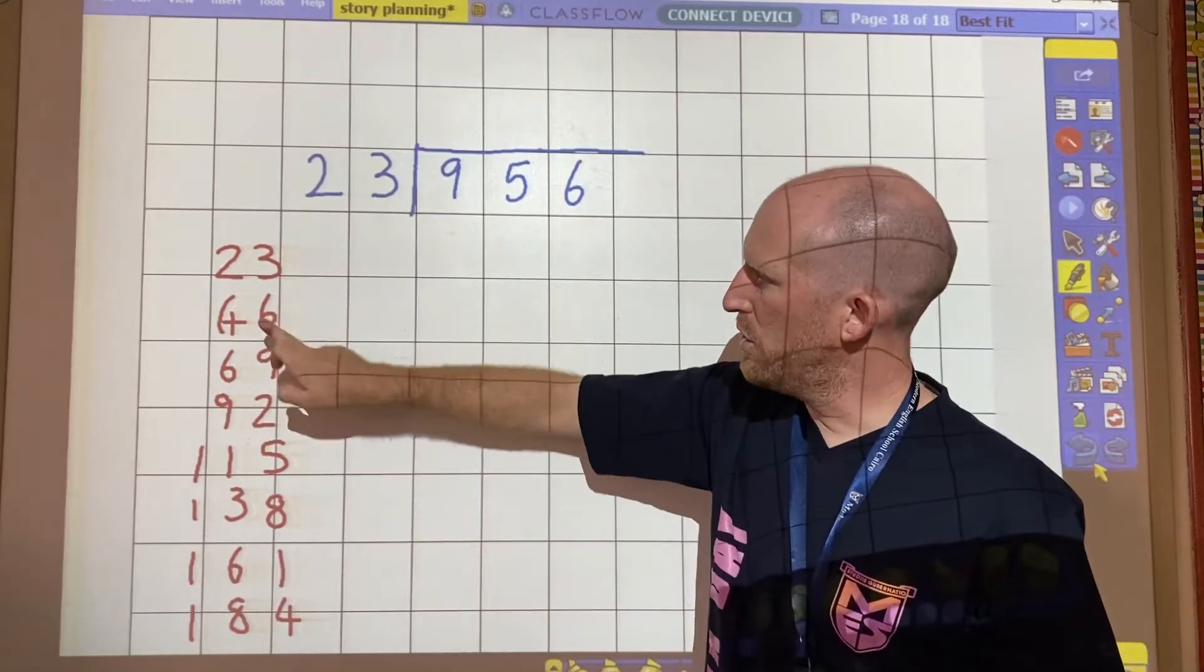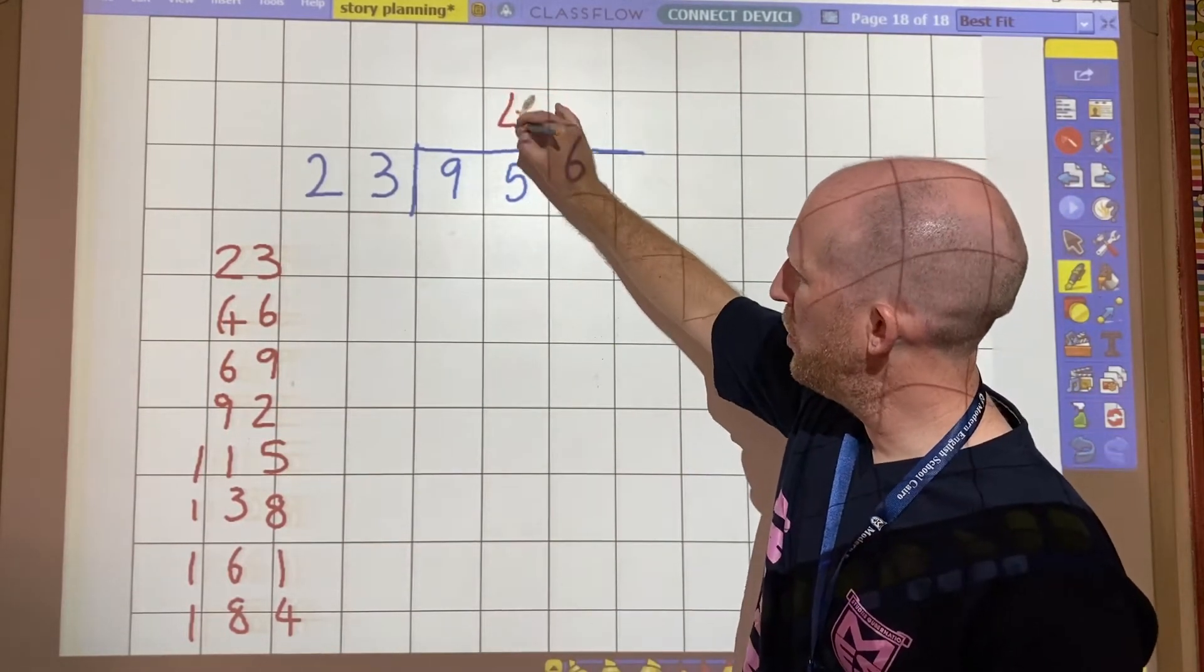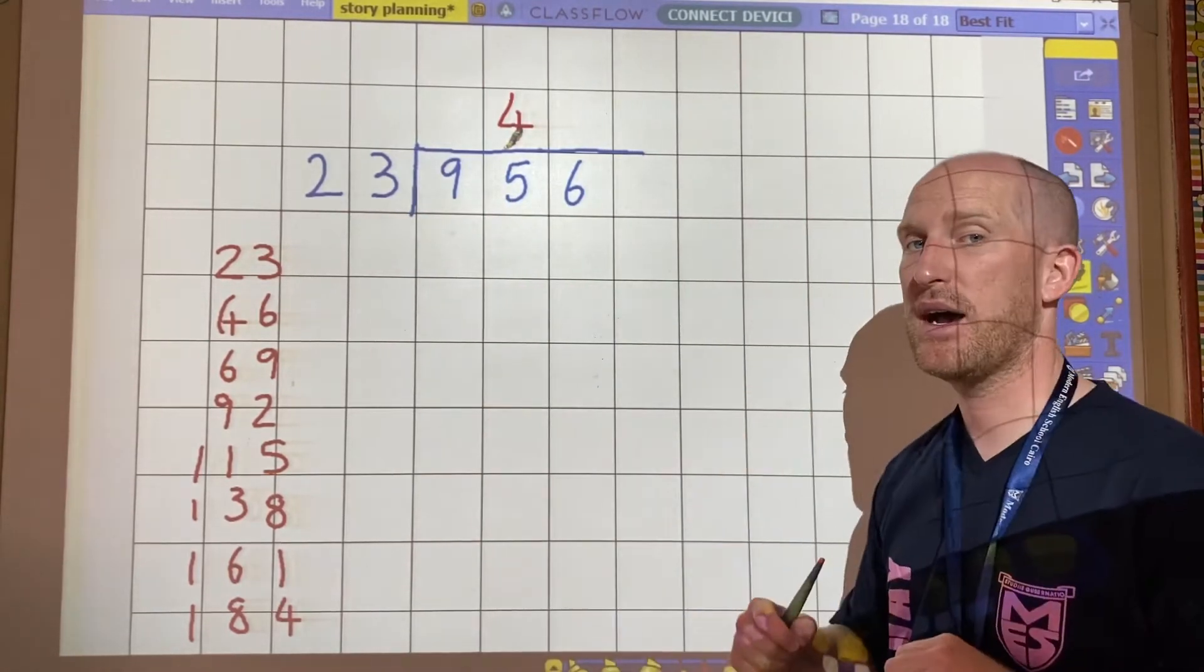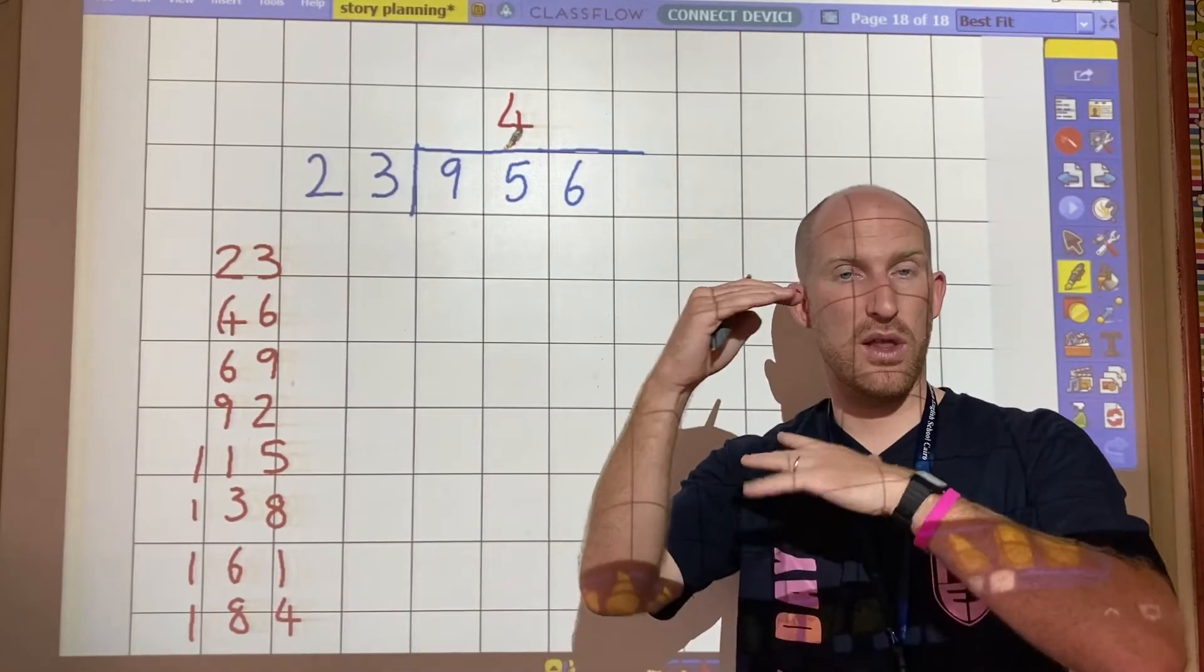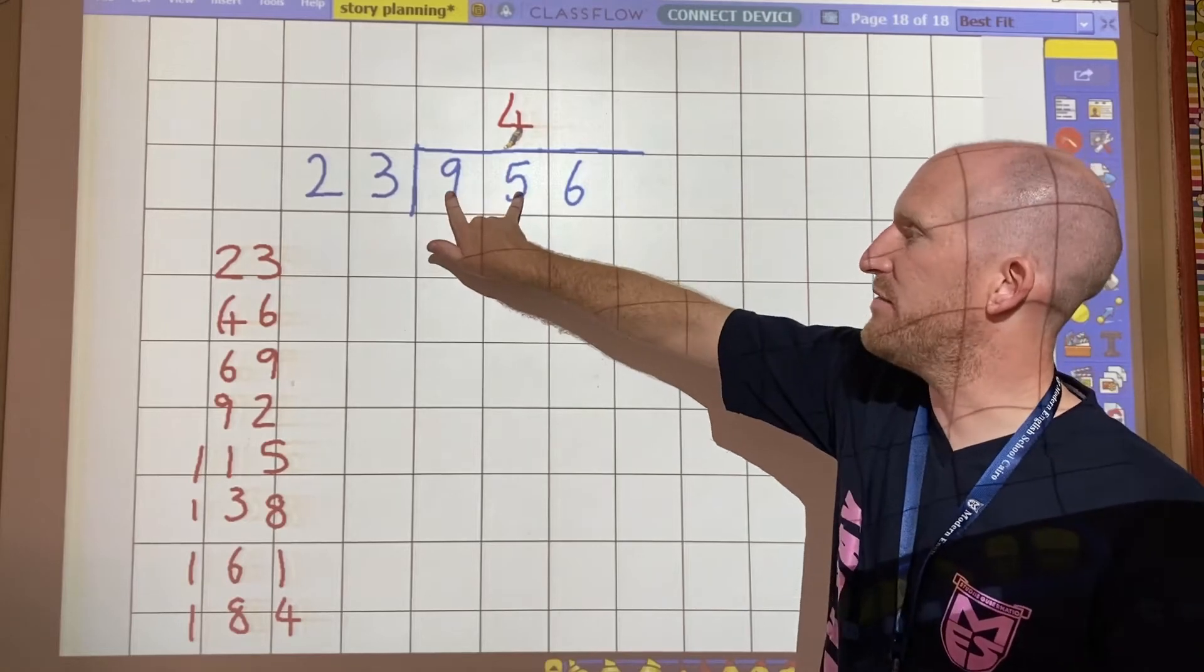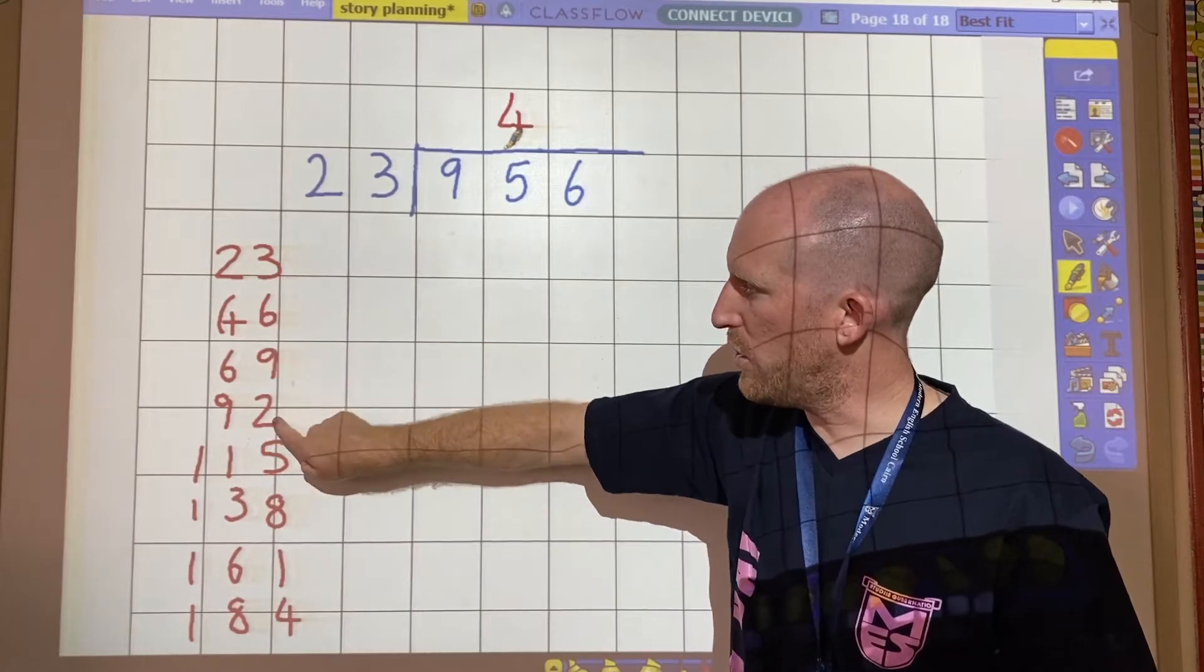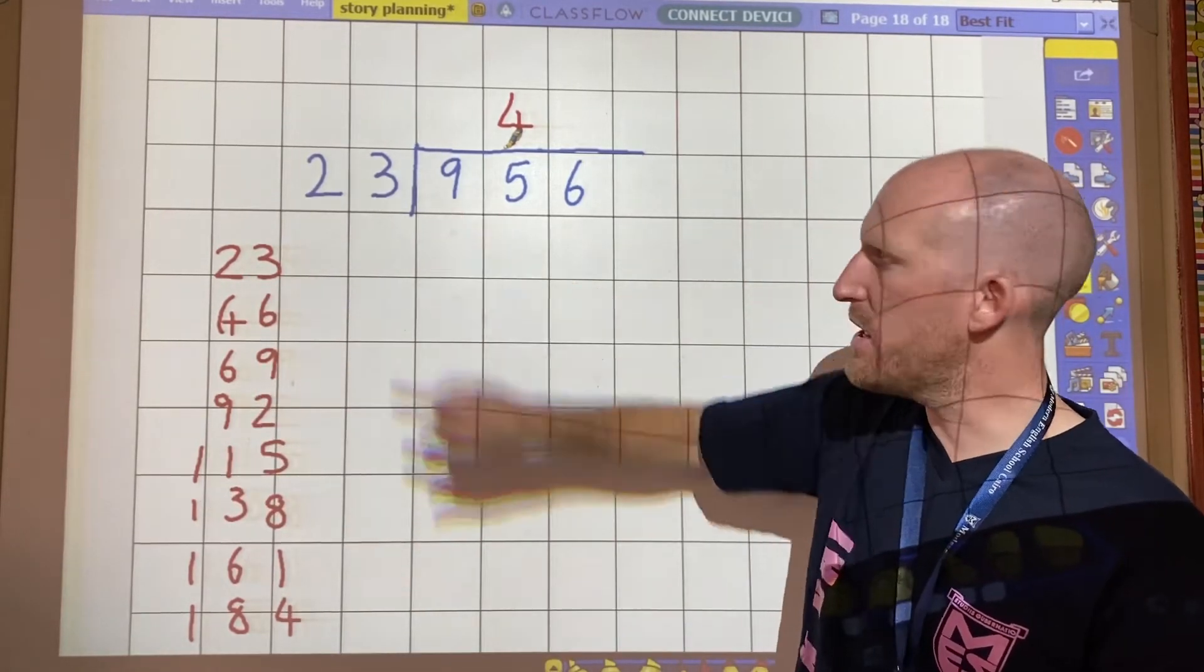Okay? One, two, three, four. There are four 23s in 95. Now this next part is where people get confused. Okay? And this is what makes long division long. So I had 95 and I found out there was four 23s. So one, two, three, four. I now must take this number away from this.